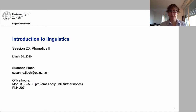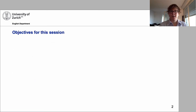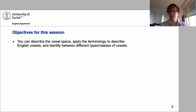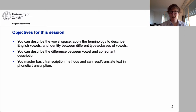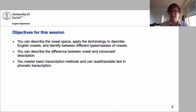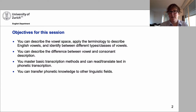Today we'll talk about Phonetics 2 and we'll tackle the vowels. Last week we talked about consonants. The objectives for this session are that you're able to describe the vowel space, apply the terminology used to describe vowels, describe the English vowel system yourself, and identify and distinguish between different types and classes of vowels. You should also know the difference between vowel and consonant description and why we take different approaches. After this session you should master basic transcription and be able to read and translate text in phonetic transcription.